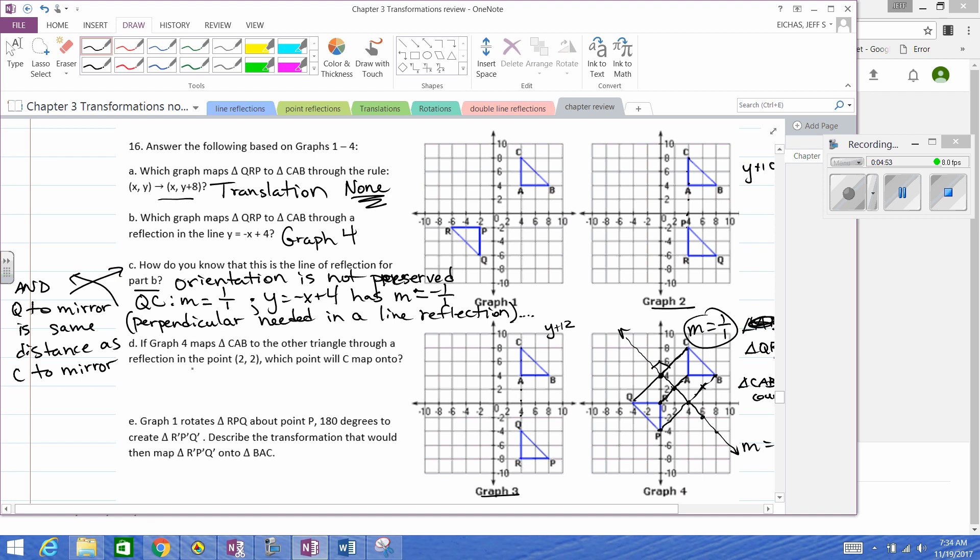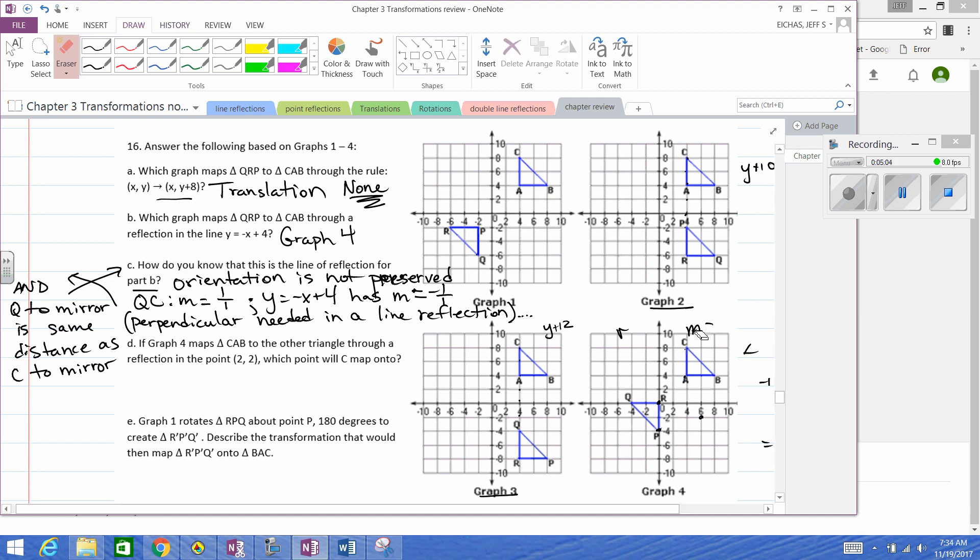If graph four maps triangle CAB to the other triangle... all right, we can try it a different way. This is a little tricky. Hypothetically, if C was mapped to a reflection in the point two, two, which point would C map to? C is at the point four, eight right now. If we were to map through two, two, it would be... one and, well actually, that's a two and a six, they're going by twos. So left two, down six. Let's go left two, down six again. So it would map to P. C would map to P.